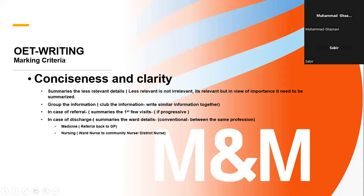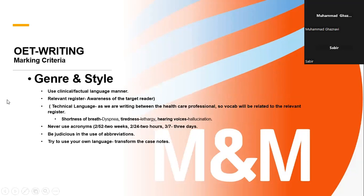Which information is less relevant, you have to summarize it down, and what is more relevant you have to expand. In case you are writing a referral letter, we have to summarize the first few visits if it's a progression of the disease. You have to summarize the less important detail. That is followed by register and style — your ability to write a letter with reference to the recipient, the audience who is receiving the letter.